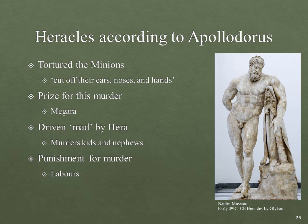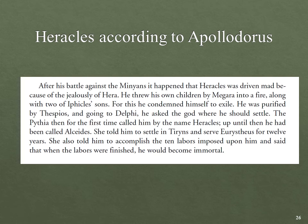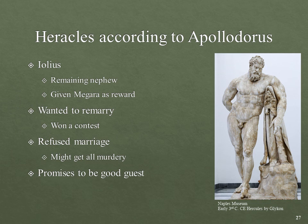But this instability returns. He was purified and went to Delphi asking where he should settle. The Pythia then, for the first time, called him by the name Heracles — up until then he had been called Alcides. She told him to settle in Tiryns and serve Eurystheus for twelve years, and to accomplish ten labors, and when those labors are done, he'll become immortal. Slight differences: there are ten labors here instead of twelve.